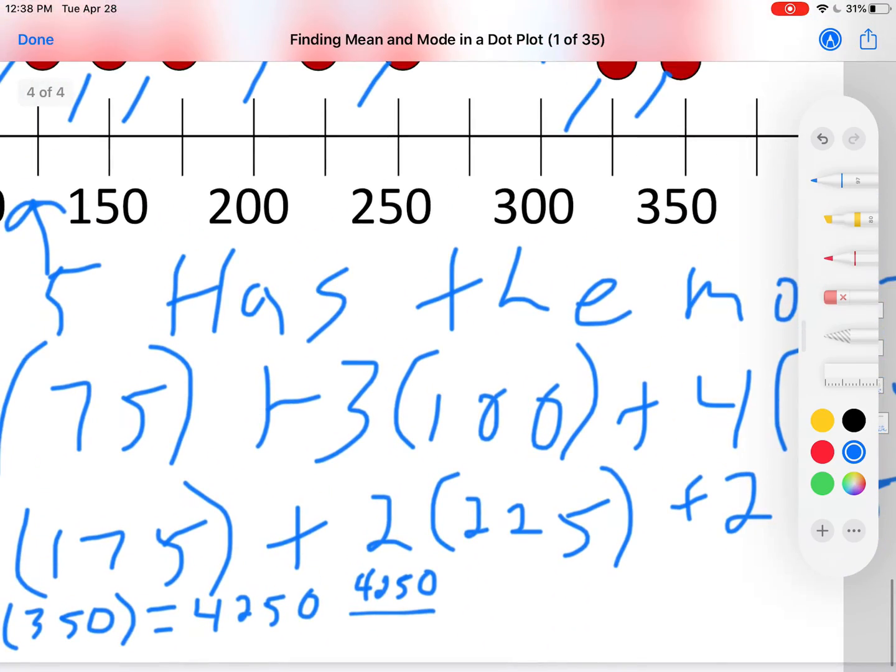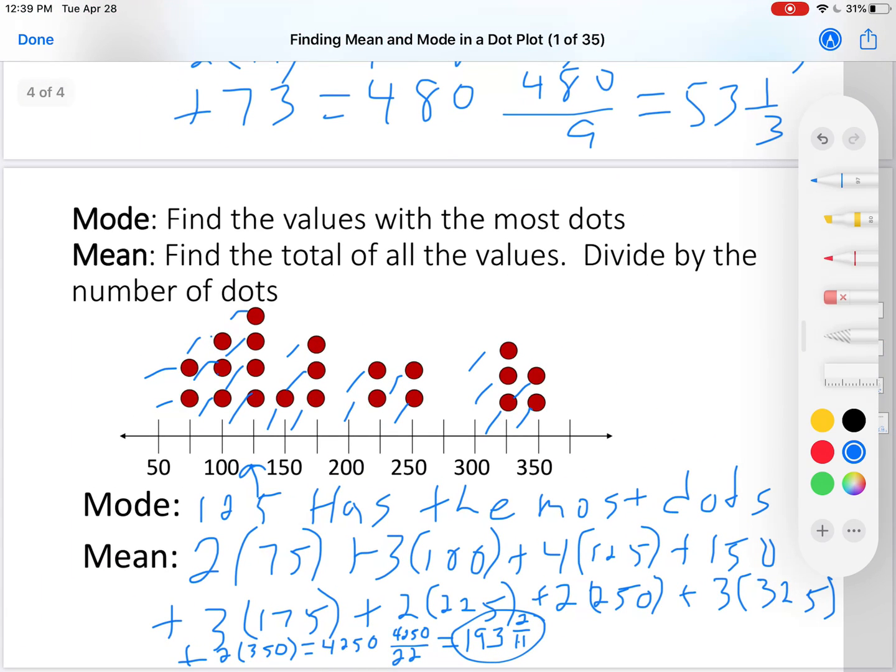So you have to divide that by 22, and I get 193 and it is a long decimal, but I'm going to turn it into a fraction and that is equal to 2 elevenths. So 193 and 2 elevenths is the mean. And that is how you show your work in finding mean. You write out all of this addition, you find the answer, then you need to show me the division and you get your mean. You should now be able to find the mode and the mean if numbers are given to you.